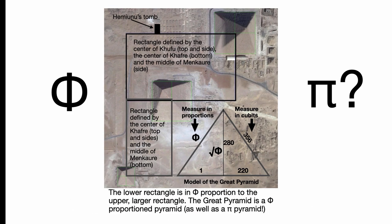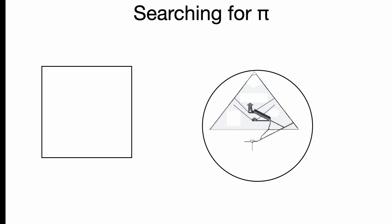It's so powerful, so interesting. As I said, the lower rectangle's in Phi proportion to the upper, larger rectangle. The idea of growth is built into this. The Great Pyramid is also a Phi proportion pyramid, as well as a Pi pyramid. But how is it a Pi pyramid? I wanted to search this out. I wanted something that was neat, like the Phi, Phi, rid of Phi, 1. I wanted something clean like that.